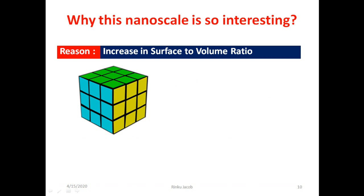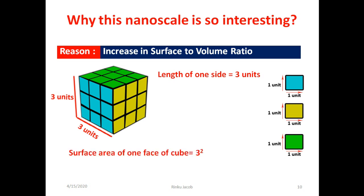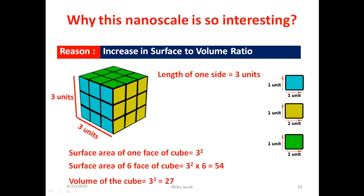Now we prove that as we reduce the size of a material its surface to volume ratio increases. We take a simple cube made of small unit cubes, each side being one unit. For the large cube with side 3 units: surface area of one face is 3×3 = 9, total surface area = 9×6 = 54 unit square. Volume = 3³ = 27 unit cube. So surface to volume ratio = 54/27 = 2.